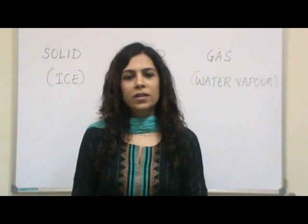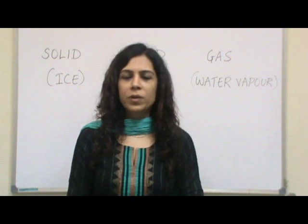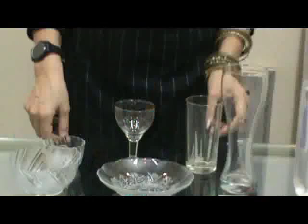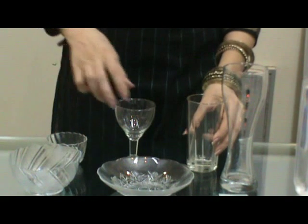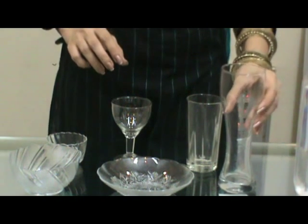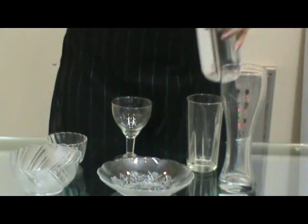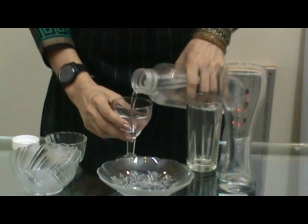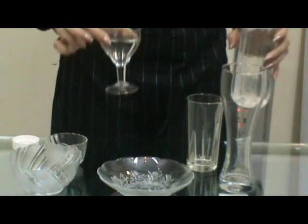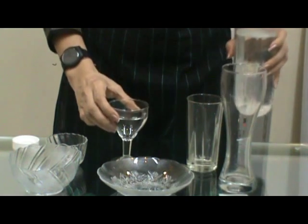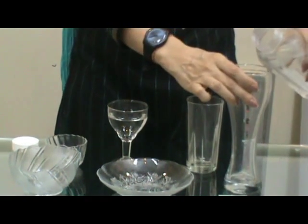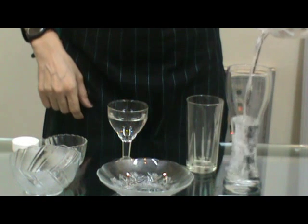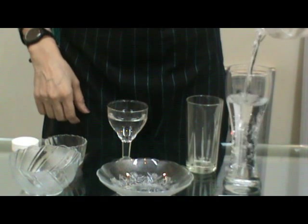So, we've learned that water comes in three forms: solid, liquid, and gas. And we've also learned that water is colorless. Now let's learn if water has any shape. What happens when we put water in this glass? Did you see? Water takes the shape of this glass. Let's put it in this tall glass — when we pour water in, water takes the shape of this tall glass.